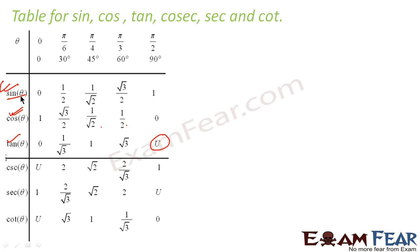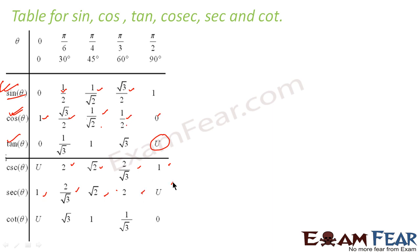Cosec is 1/sin, so: cosec 0° = undefined (1/0), cosec 30° = 2, cosec 45° = √2, cosec 60° = 2/√3, cosec 90° = 1. Sec is 1/cos, so: sec 0° = 1, sec 30° = 2/√3, sec 45° = √2, sec 60° = 2, sec 90° = undefined. Cot is 1/tan, so: cot 0° = undefined, cot 30° = √3, cot 45° = 1, cot 60° = 1/√3, cot 90° = 0.